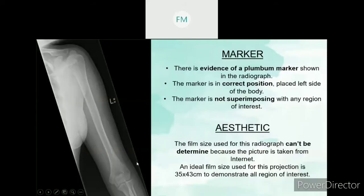For the marker: there is evidence of a lead marker shown in the radiograph. The marker is in the correct position — it is on the left side of the body. The marker is also not superimposing with any region of interest, so the marker is outside of the ROI.